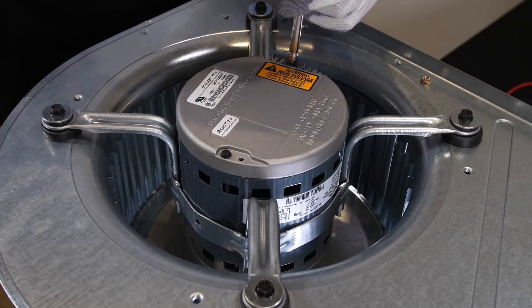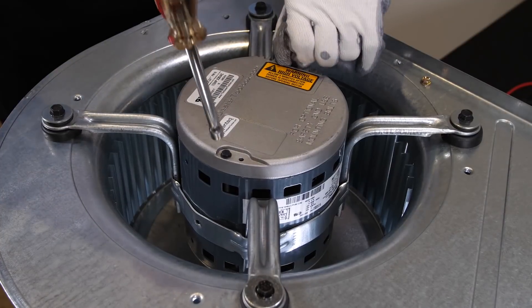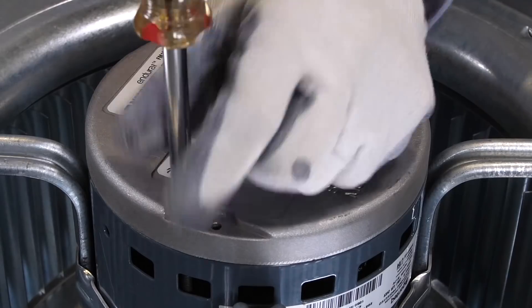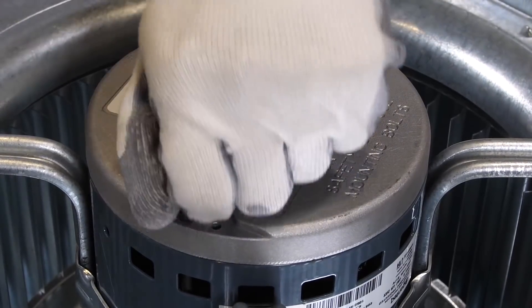Typically, the control module can be removed without removing the motor from the blower assembly. Remove the two control module mounting screws and separate the control module from the motor.